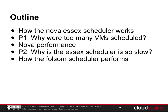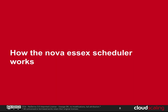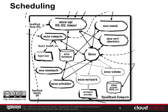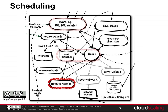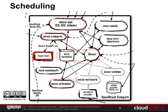We'll talk about how the Nova Essex scheduler works. When you do a Nova boot to launch a VM, the command goes into the API, which does some processing, records information to the database, and sends a message through the message queue to the scheduler. The scheduler looks at all available compute nodes, picks which one it should run on, records that in the Nova database, and sends a message through the queue to the compute node. The compute node retrieves information from the database and actually launches the instance on the hypervisor.